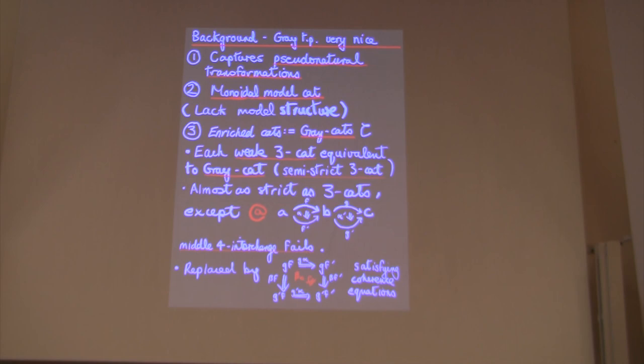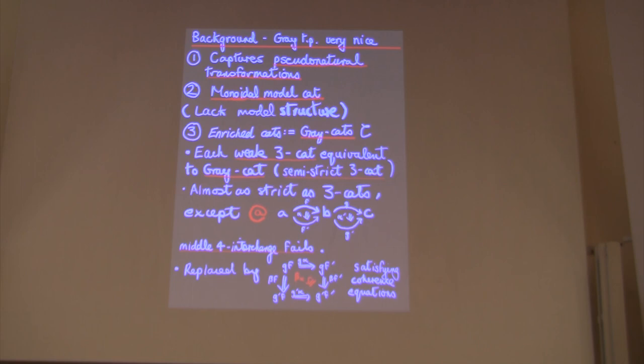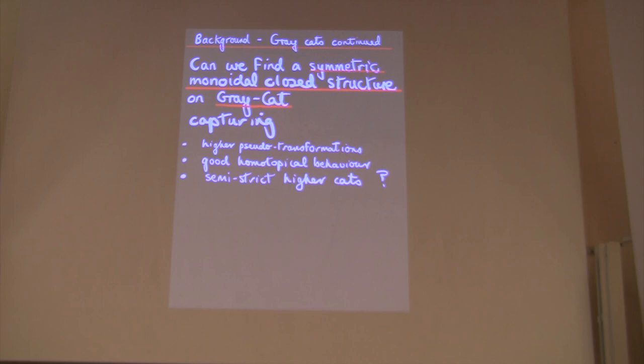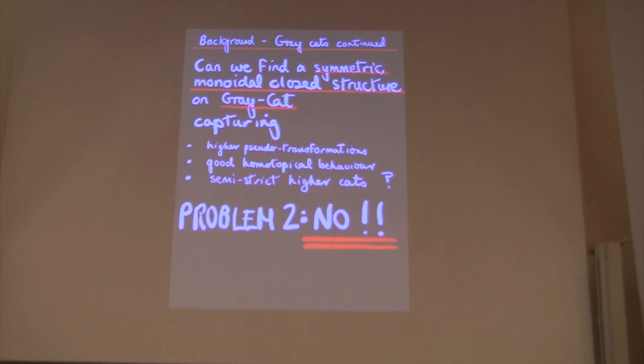That's Gray categories, and that's the two-dimensional story. So what have we done now? We've left the world of Cartesian closed categories and fixed the problem at the two-three-dimensional level by using symmetric monoidal closed categories. What we'd like to do is continue now. The big question is: can we find a symmetric monoidal closed structure on the category of Gray categories and strict maps, which has some of these good properties that we've seen in the two-dimensional setting? And the answer is no.